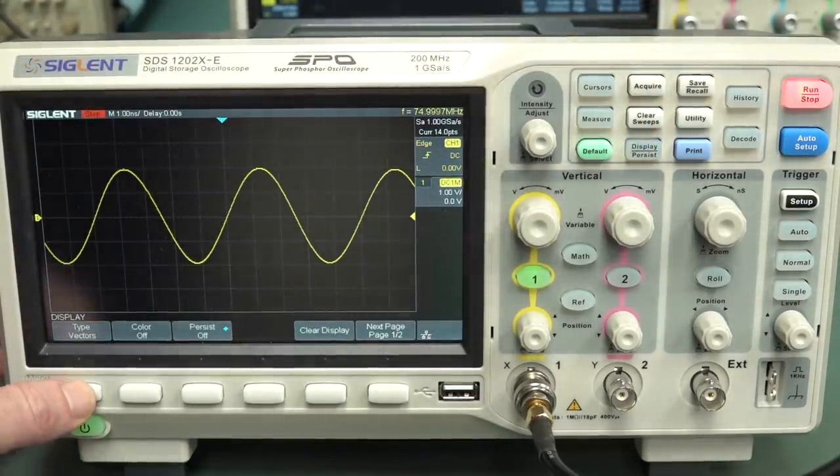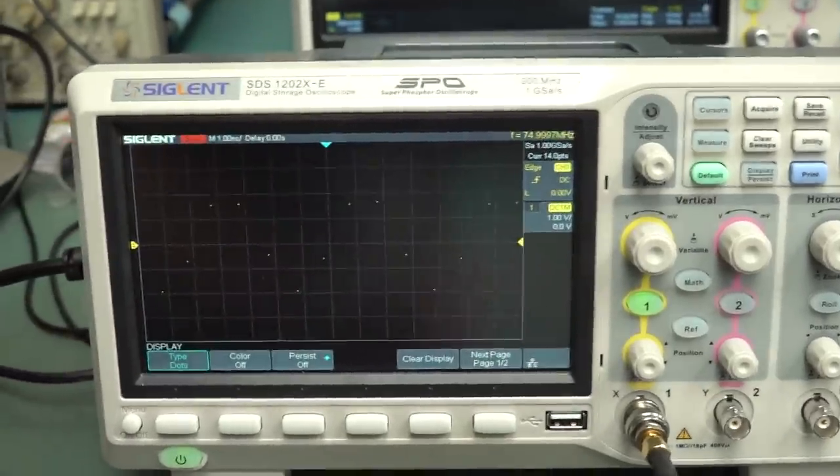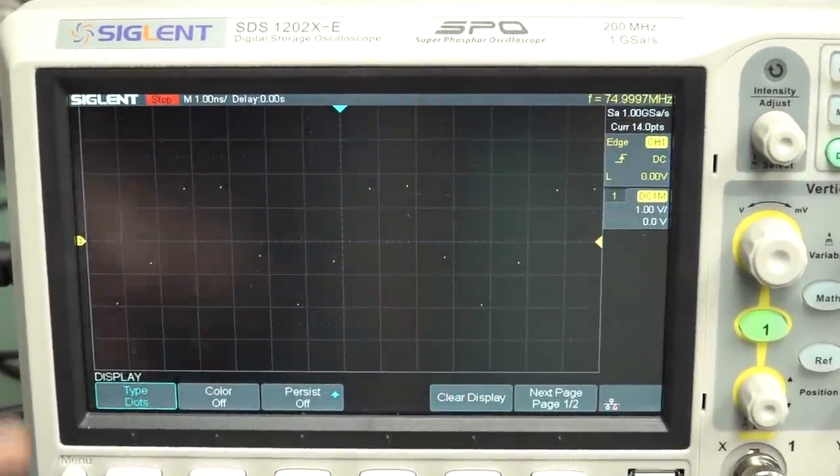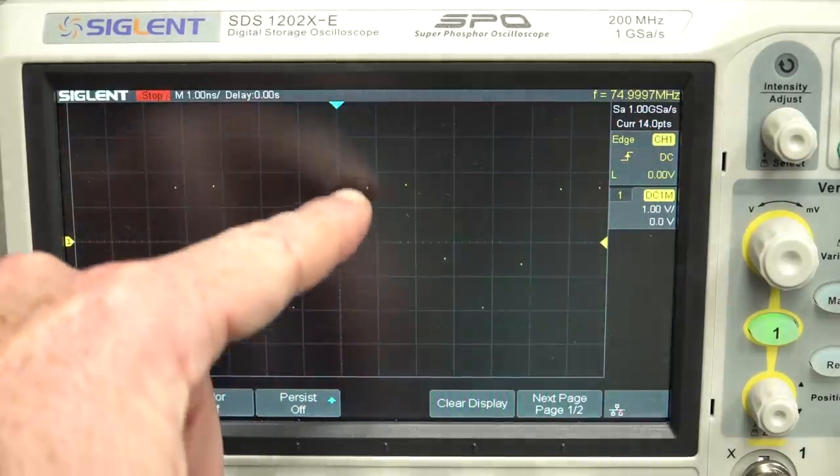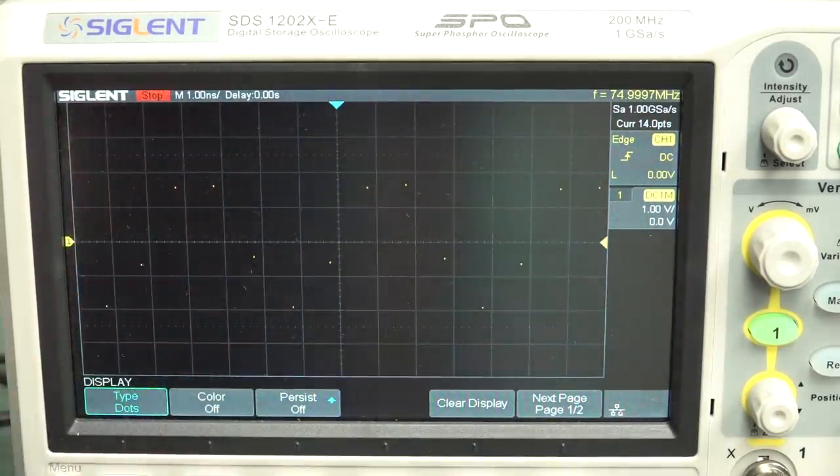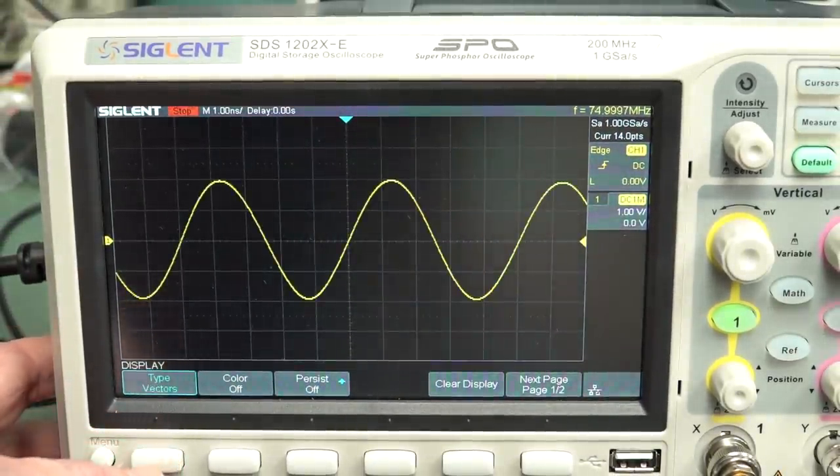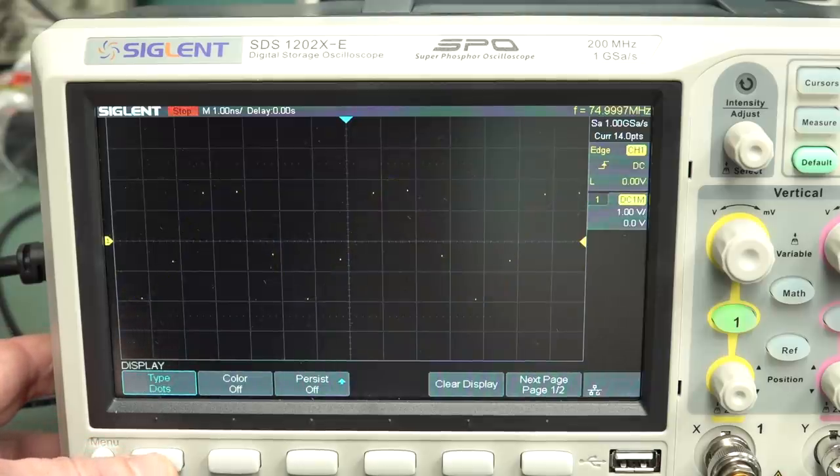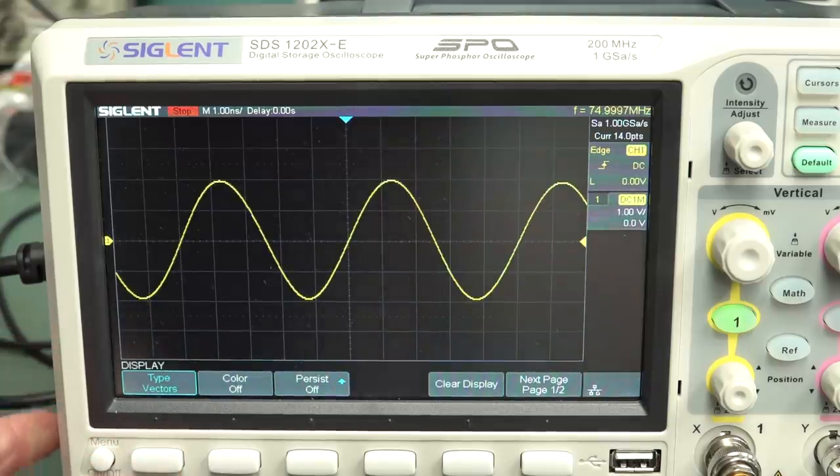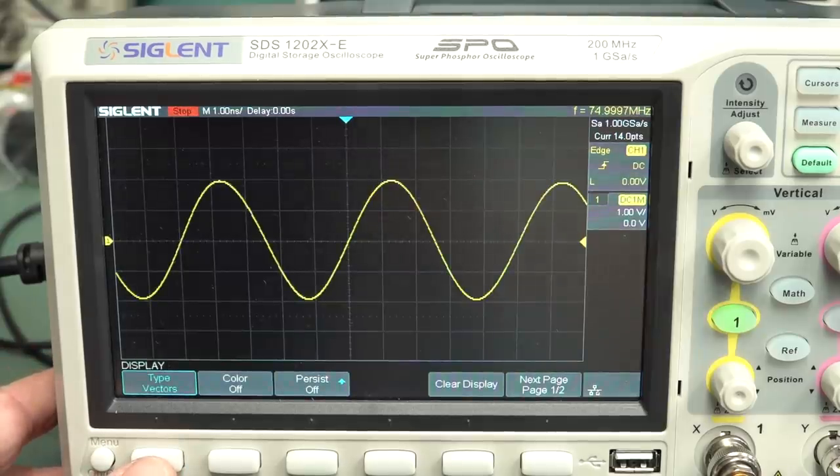But of course it's all smoke and mirrors. If we go into display here, and turn on dots, you can see, there's our dots there. Look! Little itty bitty dots. Like it doesn't look like much, does it? It kind of looks like just a random array of dots in there. But when you turn on the interpolation, it gives you a beautiful sine wave. So what's going on here? Is this cheating? Well, yes and no.